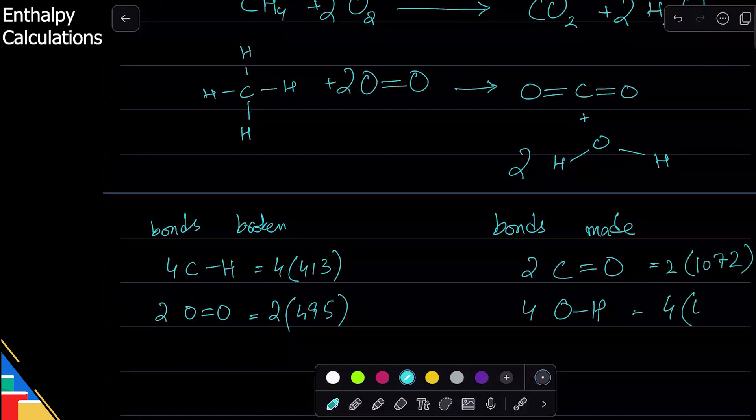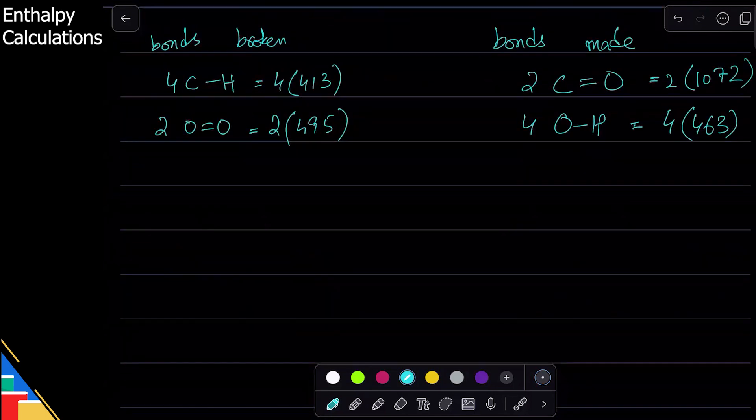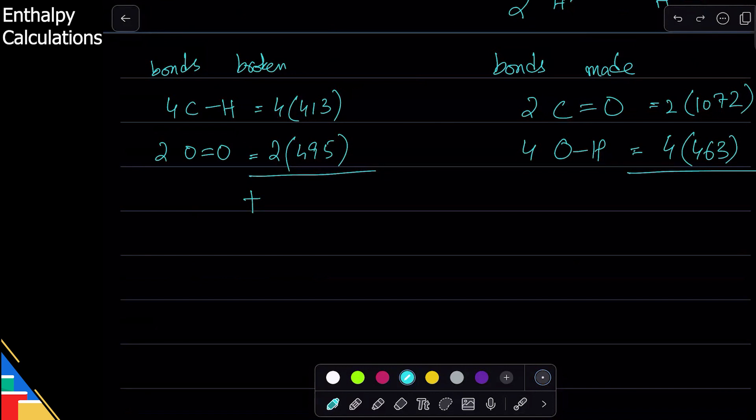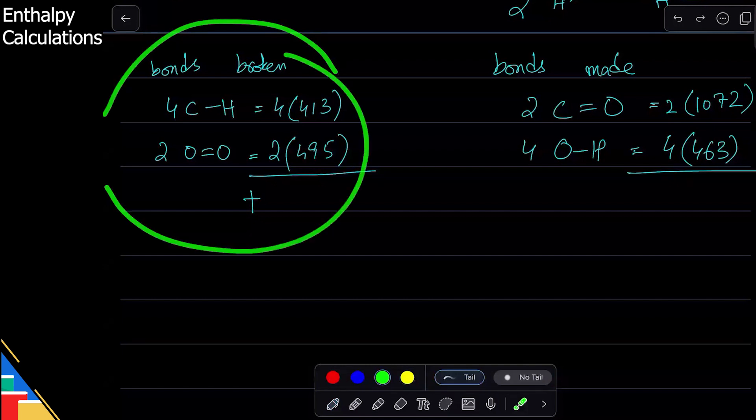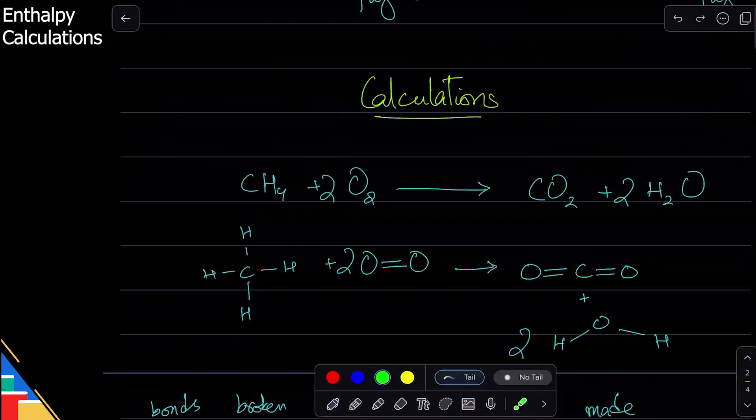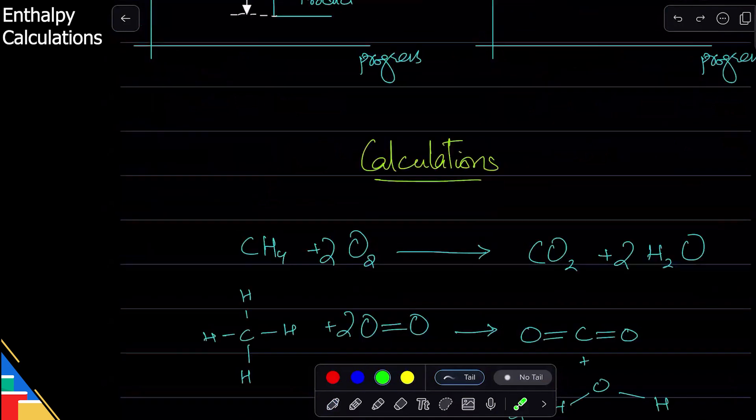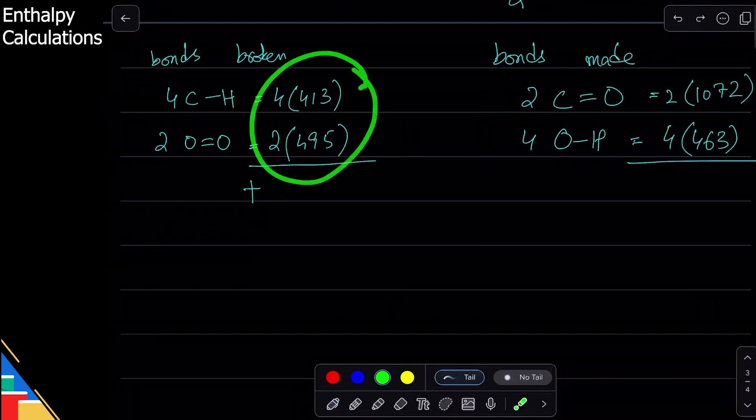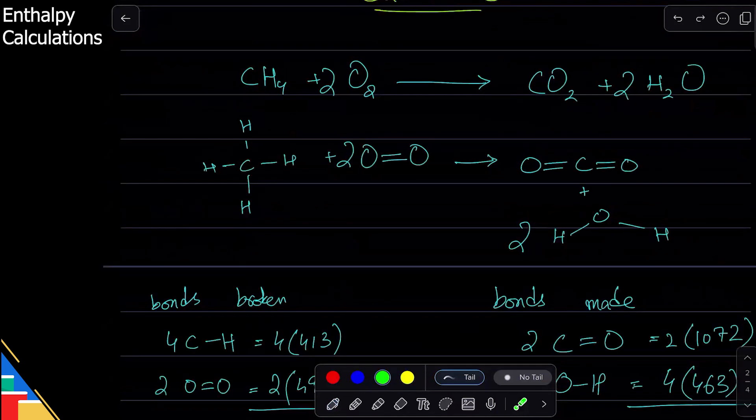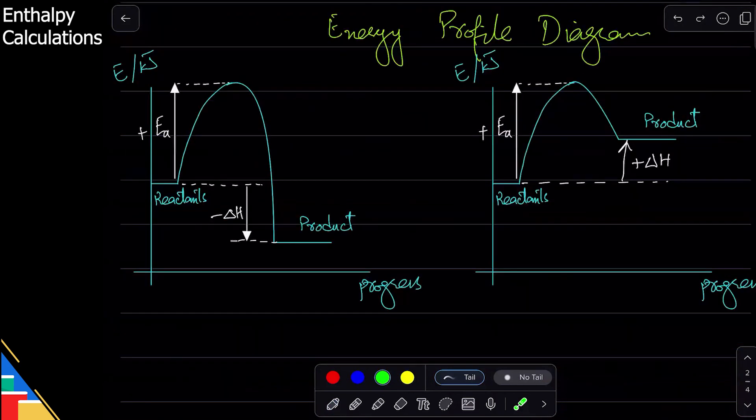So based on this data, both of these will be added, and both of these will be added. So this is the total energy of bonds broken, so this is the total energy absorbed in this reaction. And on this side, it will go down.